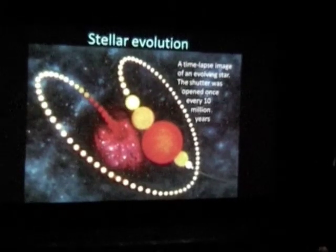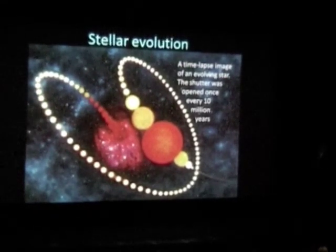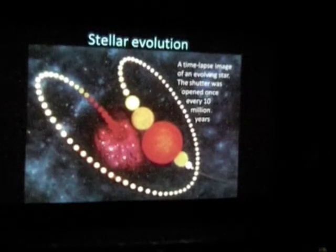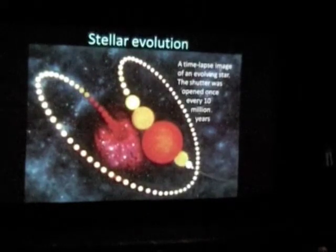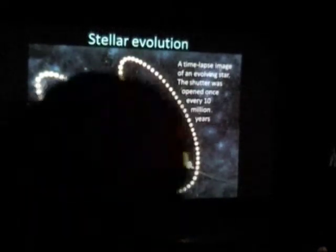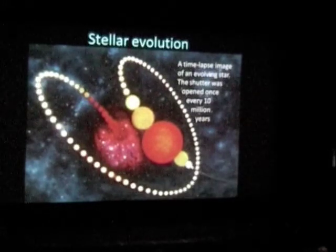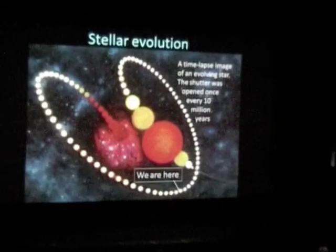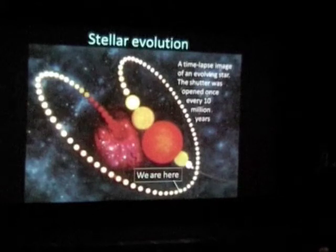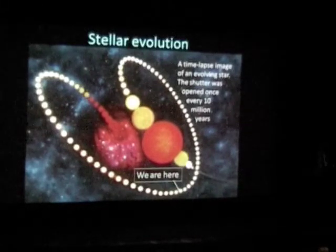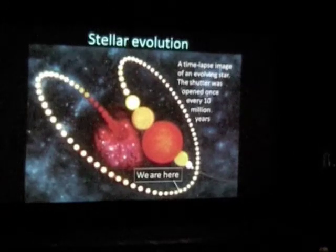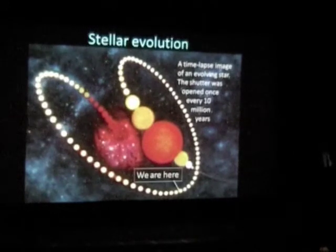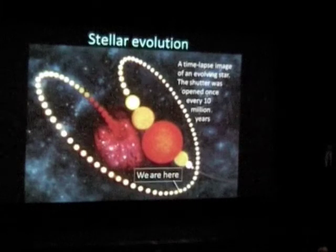Terrible things happen, the star becomes very large. And then the important thing is these dead stars that are of interest in the context of black holes. Where are we in this picture? We are there. So don't worry, we're halfway around our evolution, another roughly 5.4 billion years to go before nasty things happen. So that's how stars work.